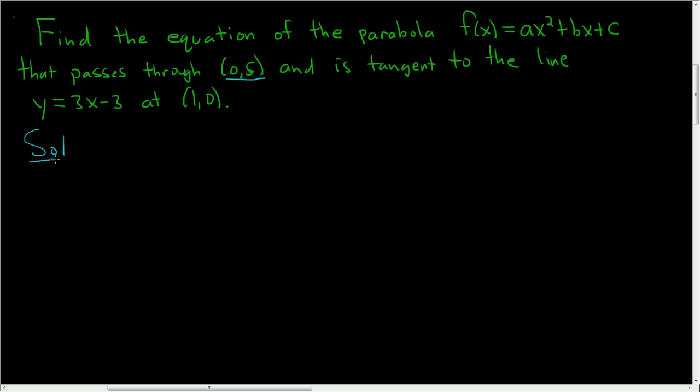Let's write down everything we're given. We're told it passes through (0, 5), which means f(0) = 5.